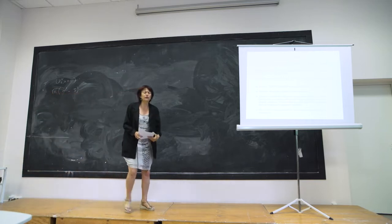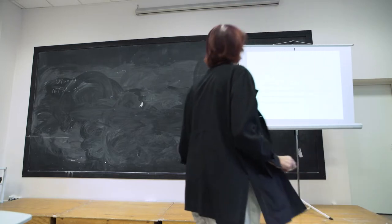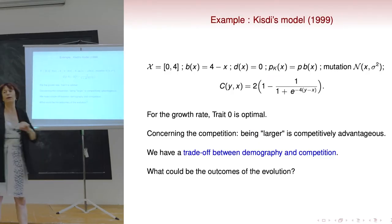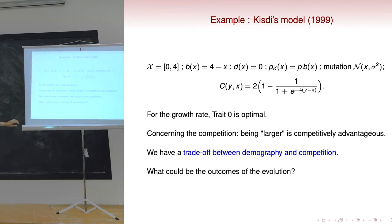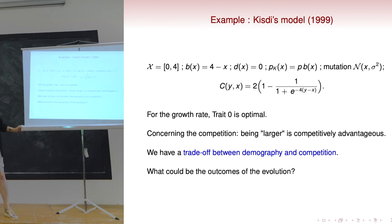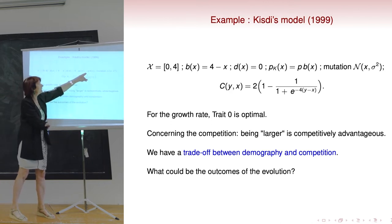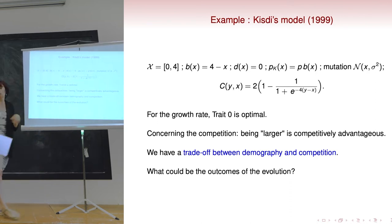Secondly, I wanted to show you some simulations in a specific case — an example taken from a famous paper by Eva Kisdi, with asymmetric competition. The trait space is [0, 4]. B(x) = 4 − x, and D(x) = 0. That means the growth rate is decreasing in x, so the optimal trait is 0 — the trait which maximizes the growth rate. You have mutation with mutation rate p·B(x), with a Gaussian mutation law with variance σ².